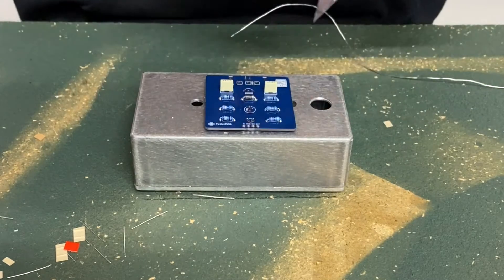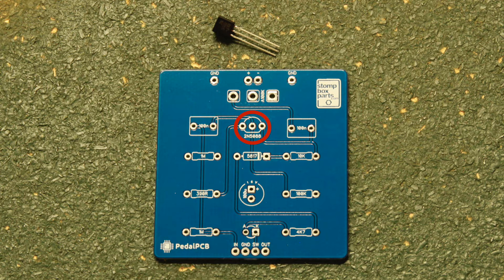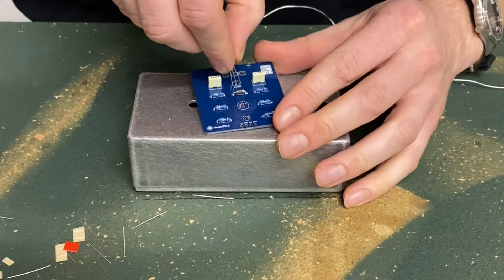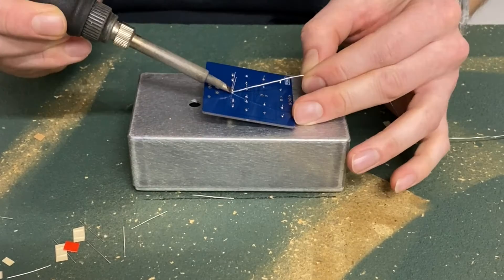Next, take the 2N5088 transistor. It goes here on the PCB. This part has polarity and must get soldered in with the flat side of the transistor matching the flat side of the diagram on the PCB. Double check polarity and solder it in.